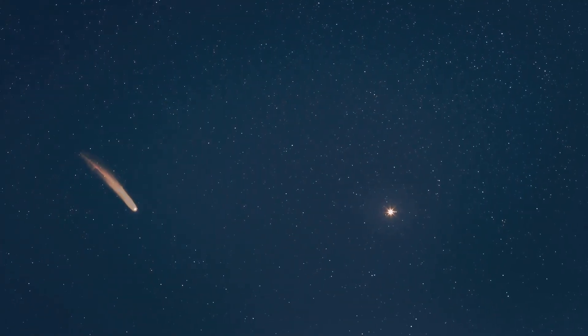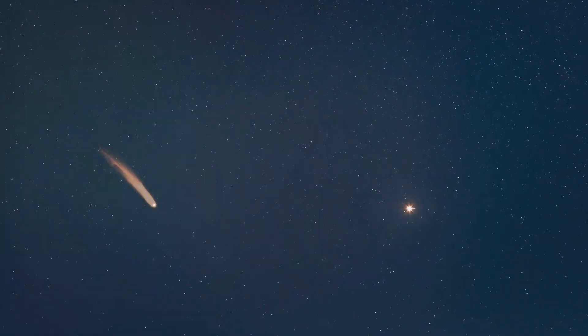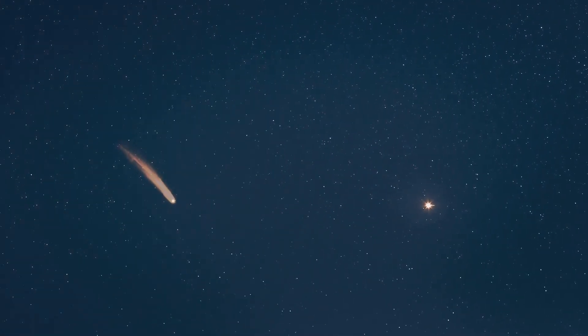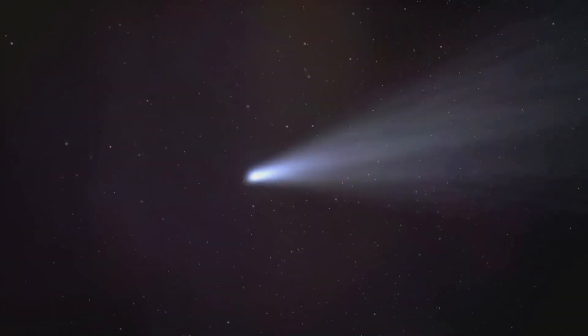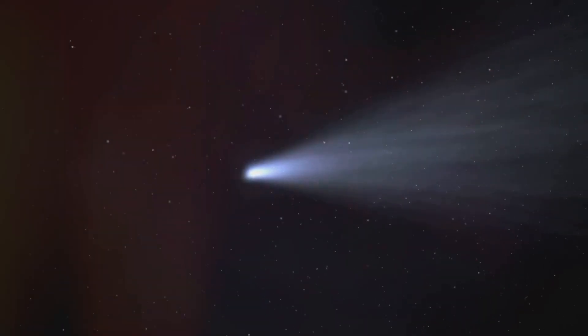When an Oort Cloud object is nudged onto a trajectory that brings it closer to the sun, something spectacular happens. These objects, which have been drifting in the distant reaches of our solar system for billions of years, suddenly come to life.